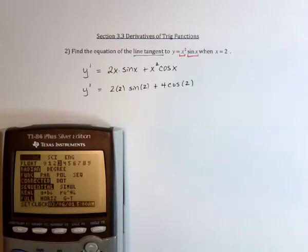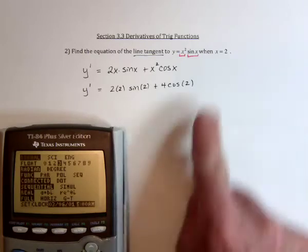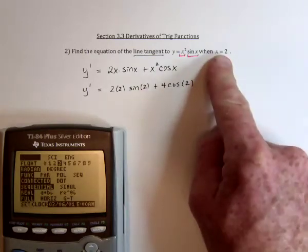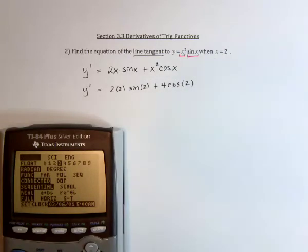So make sure that it's in radians, because that doesn't say 2 degrees, so it must mean 2 in radians.